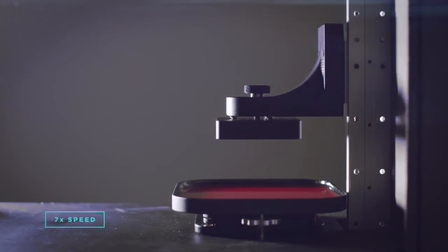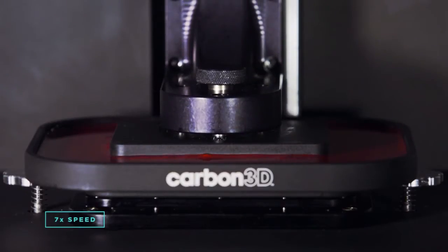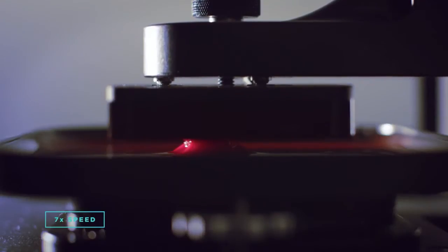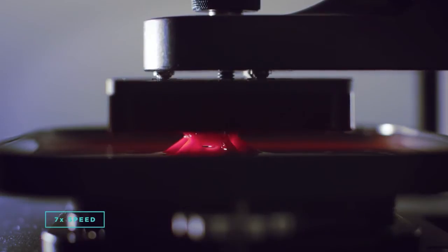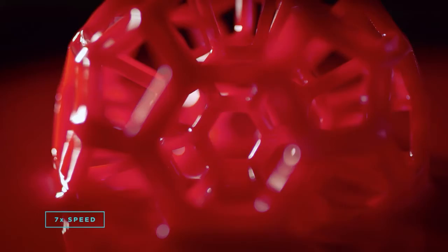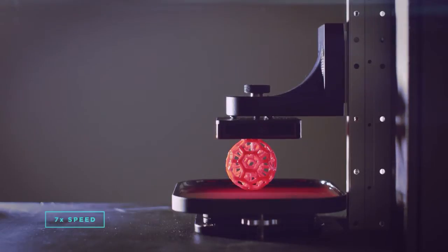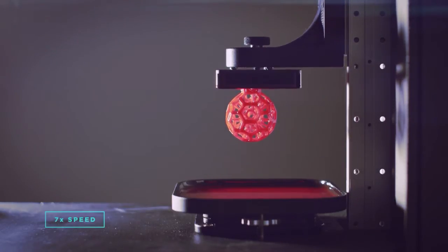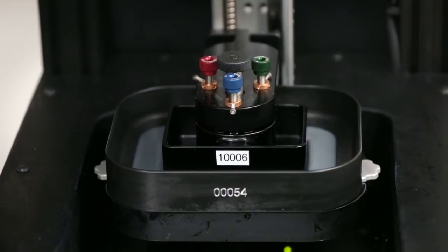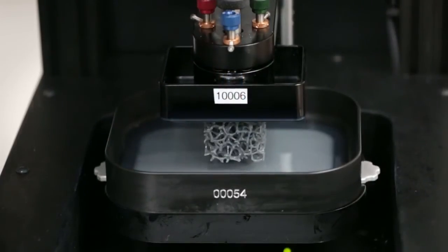In this process we're able to cure the layer while maintaining a continuous liquid interface, so instead of having that stepwise layer-by-layer process we're able to do it more continuously. So it can be done faster and the properties of the part are not layered. They're stronger in both the printed direction as well as the other direction.